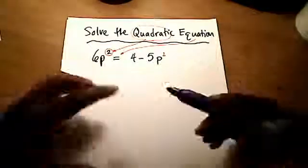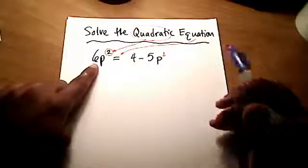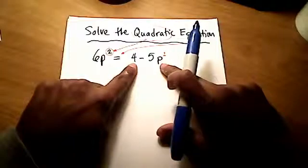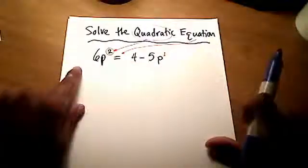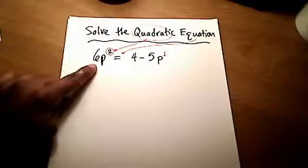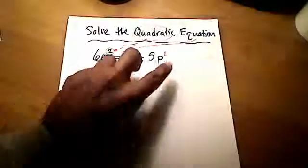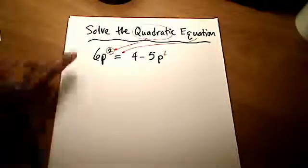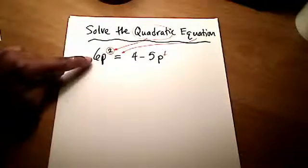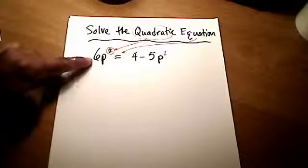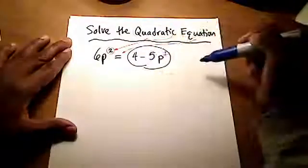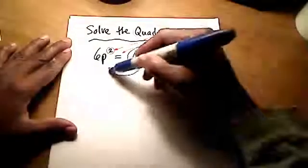Now, there are a couple of things we could do to kind of get all the terms together. We could move this 6p² over to the right-hand side, or we could move these two terms, 4 minus 5p, over to the left-hand side. And it probably makes more sense to move one term, right, less work, than it is to move two terms. But in this case, since our quadratic, which is 6p², our quadratic term here, is a positive number, that coefficient there is a positive 6, we actually want to keep it positive. So it turns out that we should actually move these two on the right-hand side over to the left-hand side.